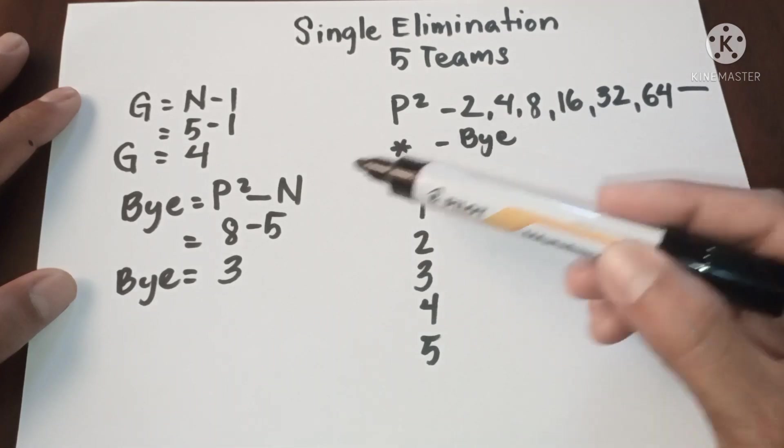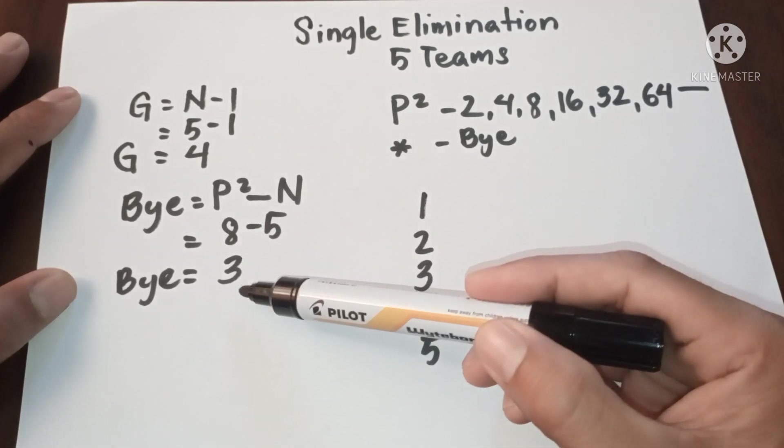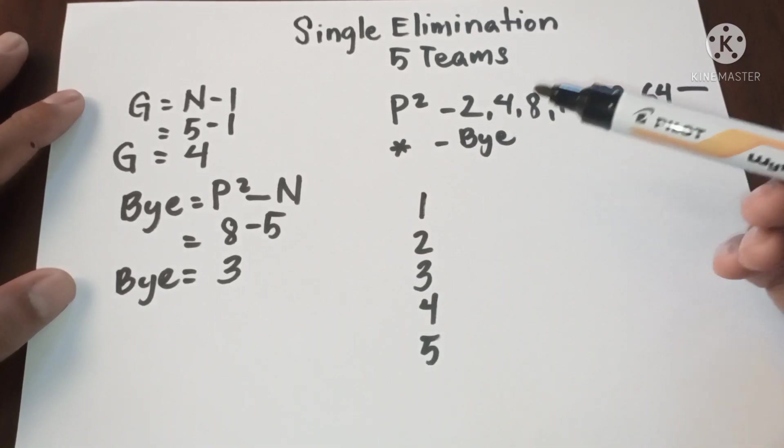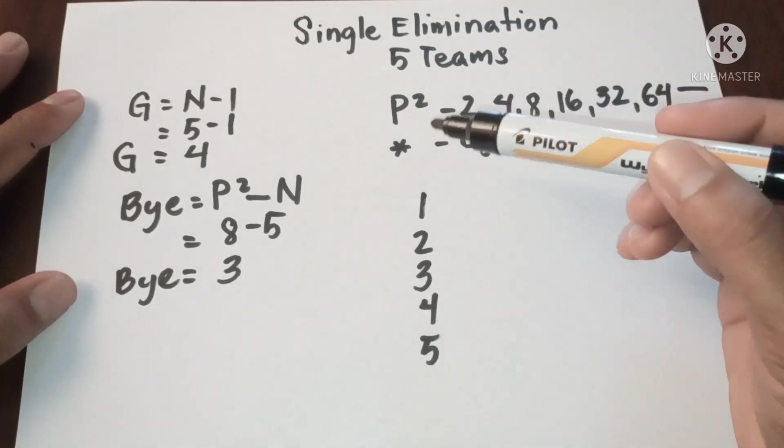So the next higher power of two to five is eight, meaning eight minus five equals three. So we have three byes.